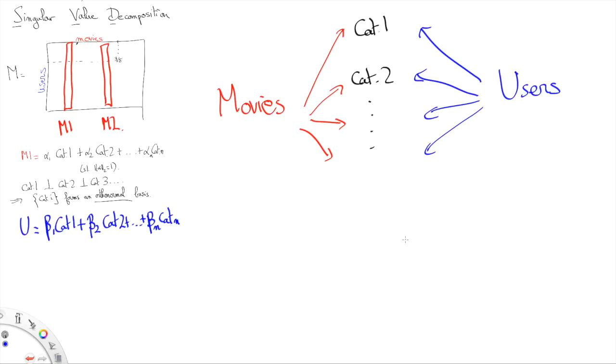Quick technical detail: if the number of users is larger than the number of movies, we'll have to create useless user categories which will still be unit vectors orthogonal to other basis vectors, but the ratings by these useless user categories will be zero for all movies. That's just a technical detail.